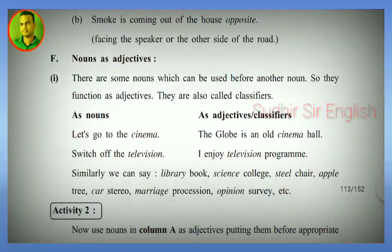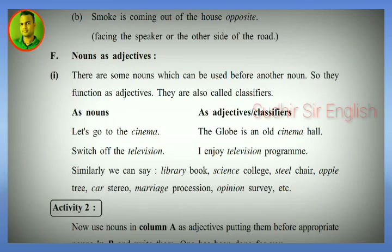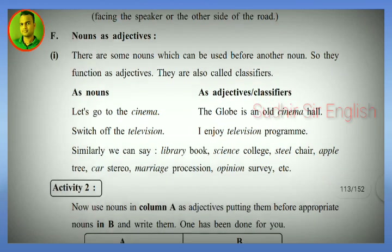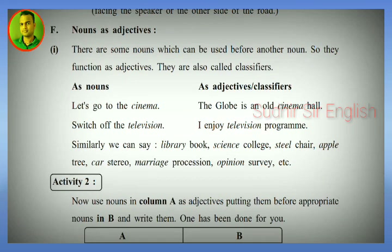If you use nouns as adjectives: there are some nouns which can be used before another noun, so they function as adjectives. These are also called classifiers. For example, in 'cinema hall', 'cinema' is a noun used as an adjective/classifier. In 'television programme', 'television' is the noun used as a classifier before 'programme.'